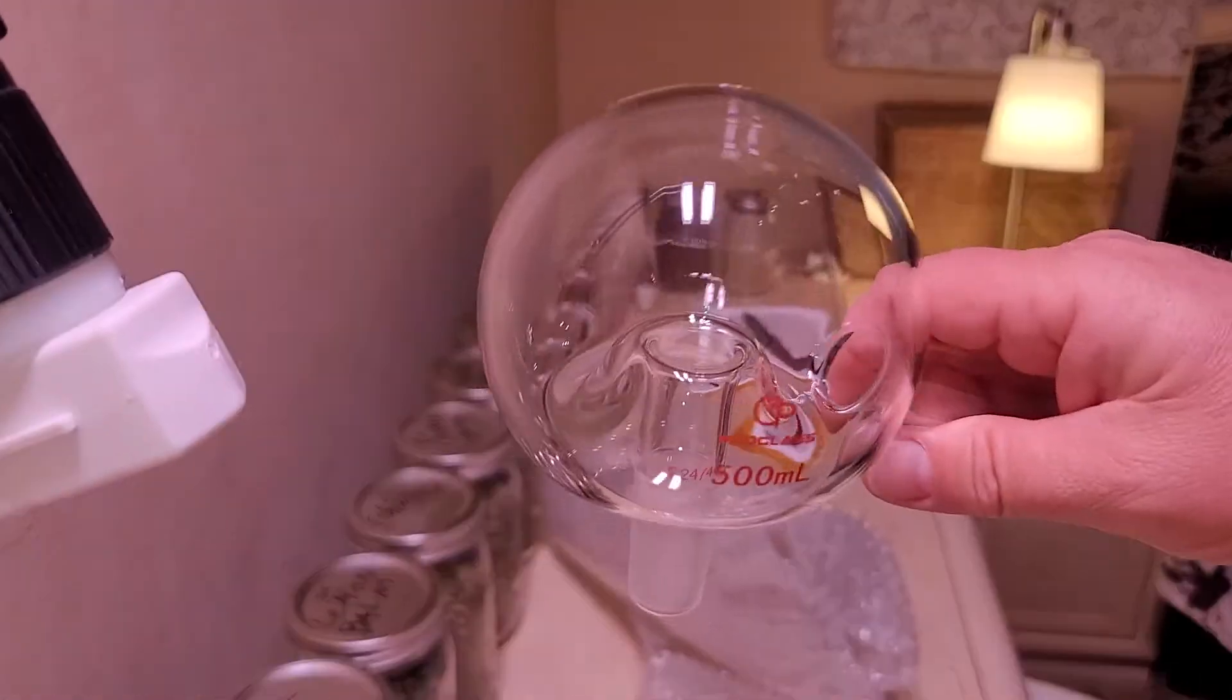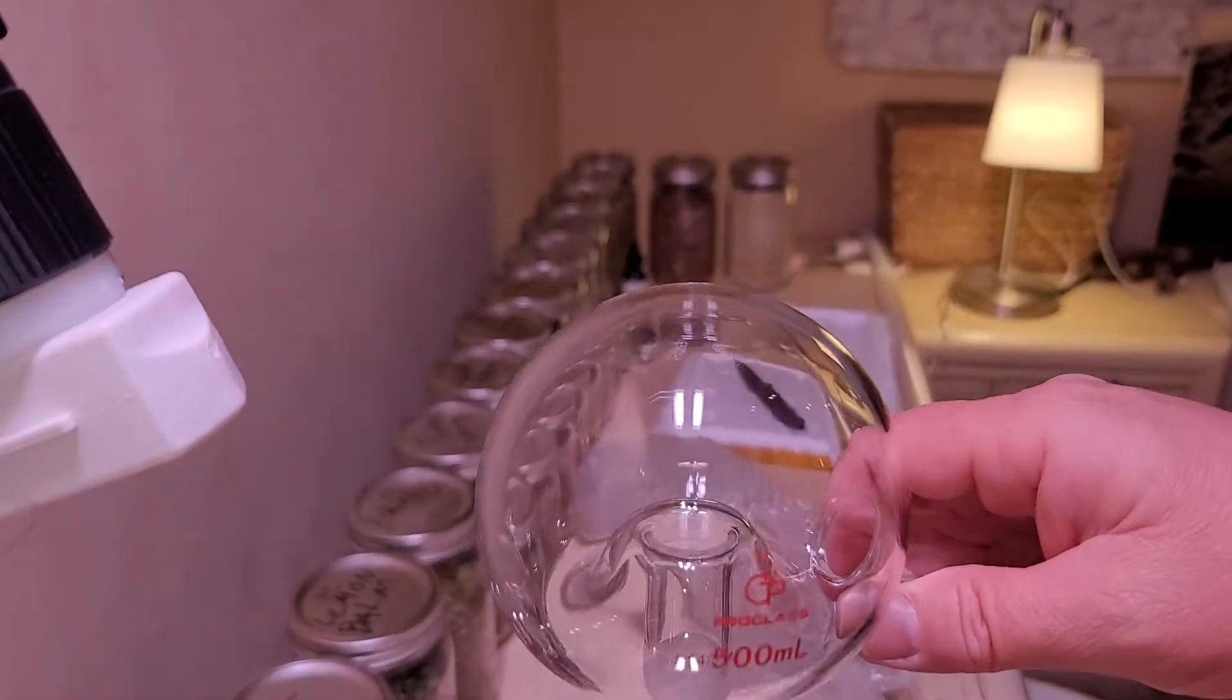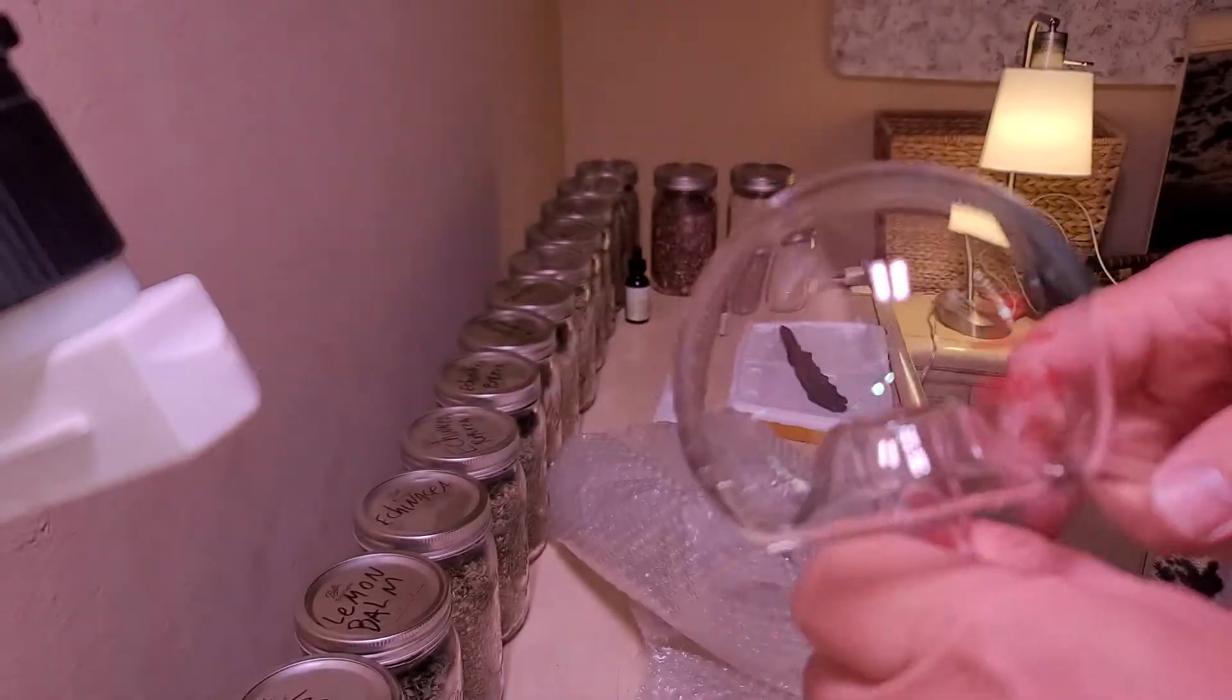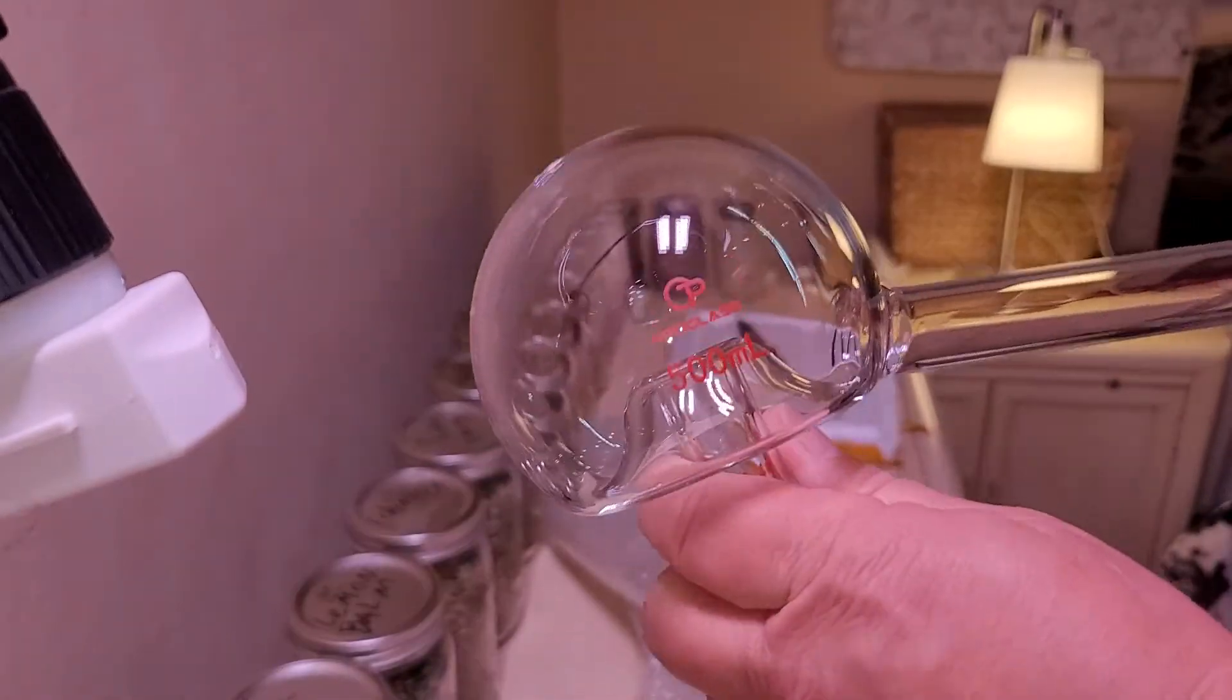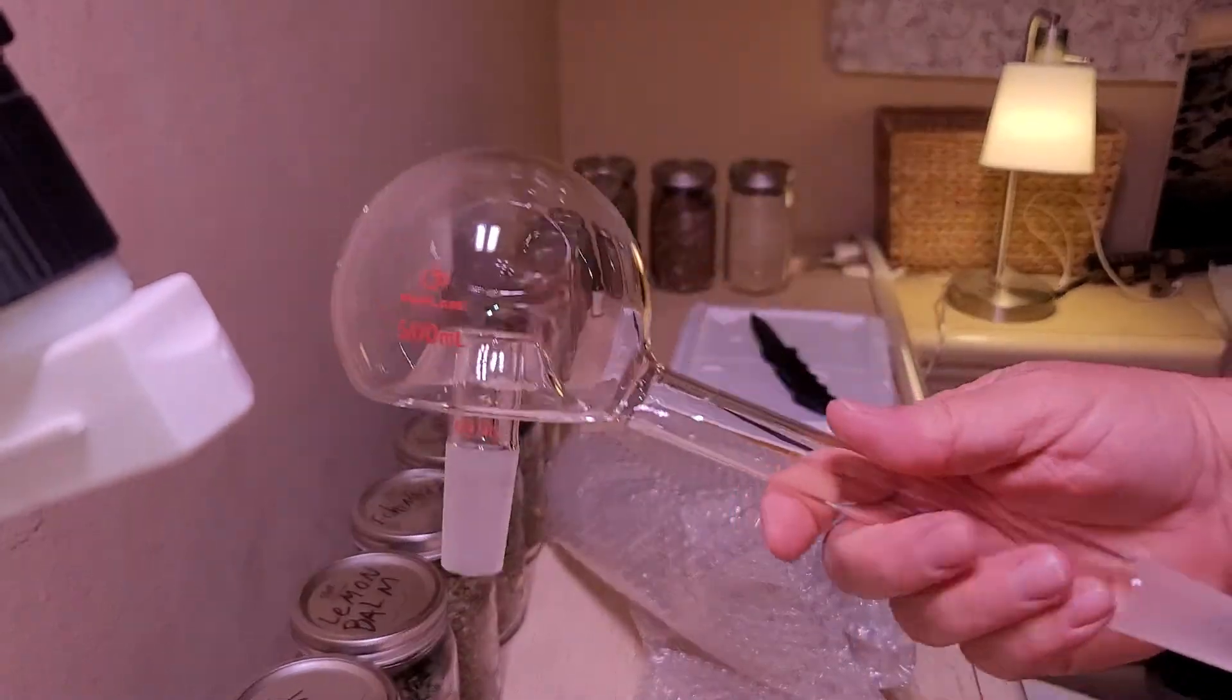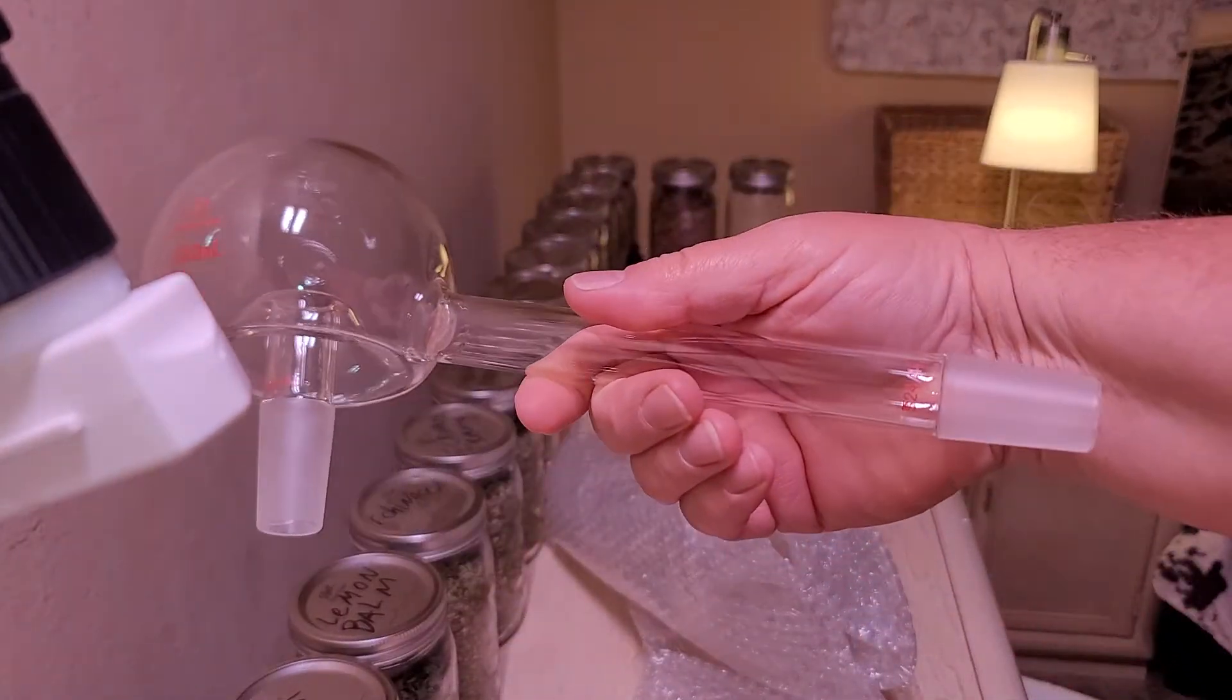Some of the reproduction alembics that I've seen out there don't have the drip rail, which is important. They're much more efficient with that drip rail in there, which makes this a nice piece of alchemical glassware for my collection.